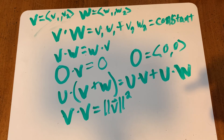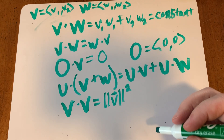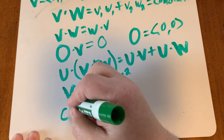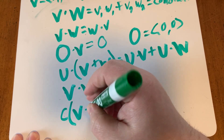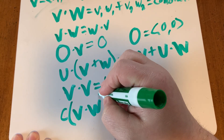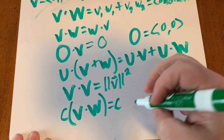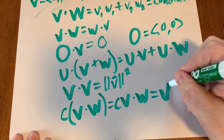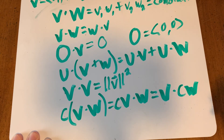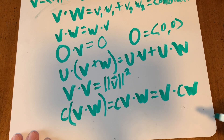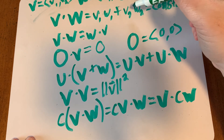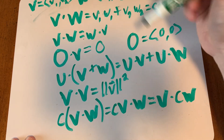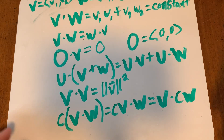The last property is that if you have a scalar times a dot product, you can apply the scalar to the first vector or apply the scalar to the second vector, because that scalar distributes to each of the products. So it doesn't matter whether c is with W1 and W2 or with V1 and V2.